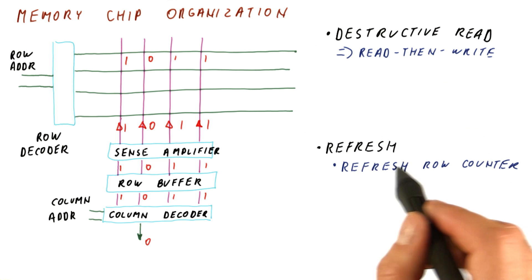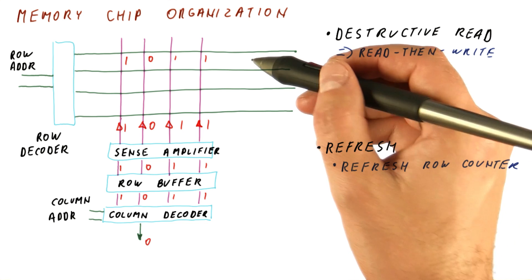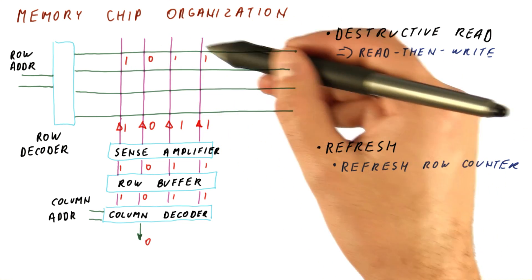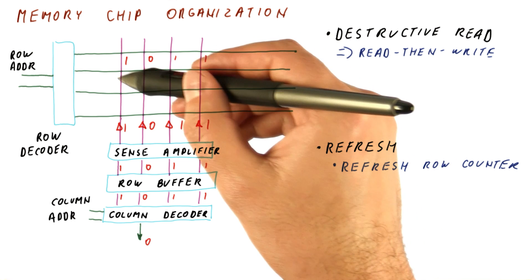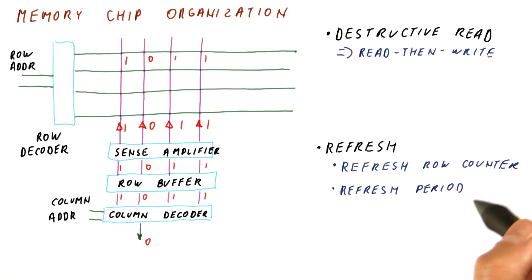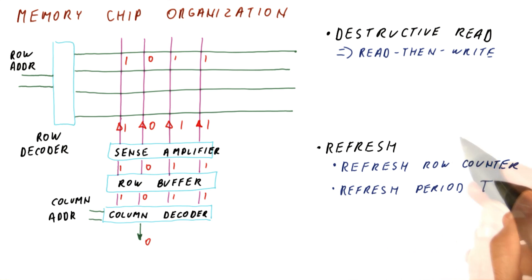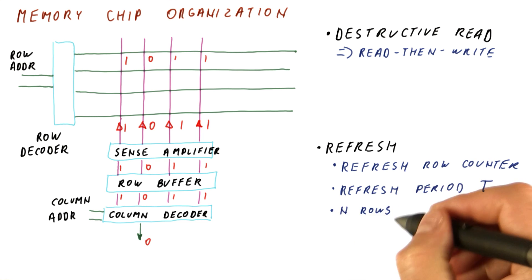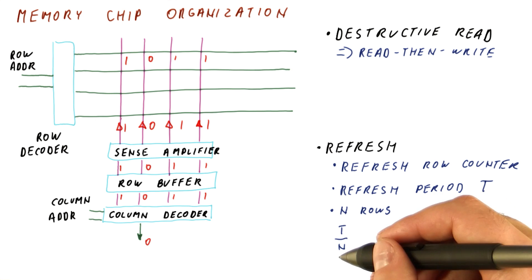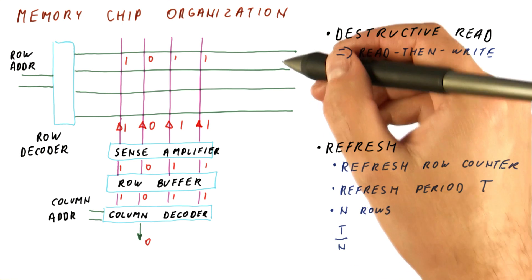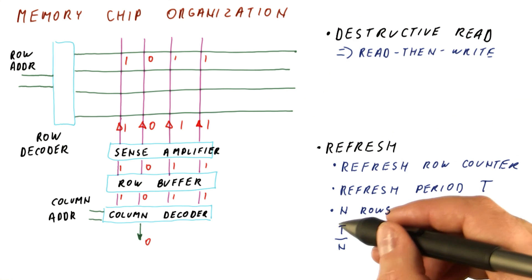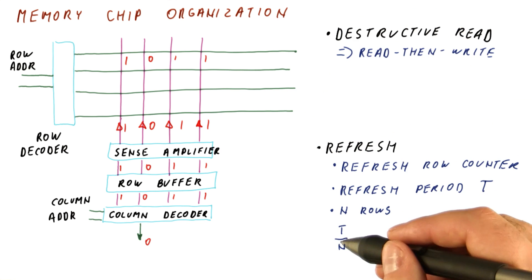What needs to happen for refresh is that we have a refresh row counter. It starts at zero, we use it to refresh that row, then it moves to one, we use it to refresh the next row, and so on. If a row needs to be refreshed within some refresh period t and we have n rows, then every t over n seconds we have to refresh one row, so that by the time we are done we are ready to refresh again a row that would only last for a period of t.